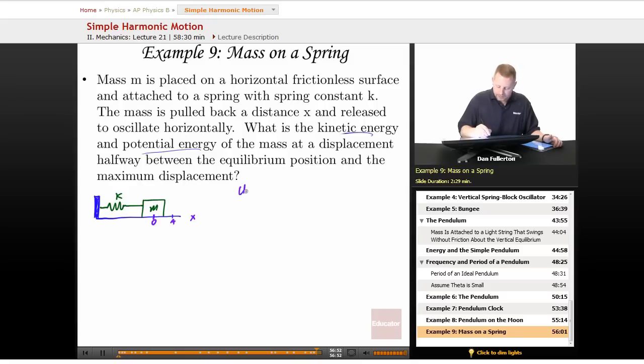And what we know is that the maximum energy is one-half kx squared. So the potential energy due to the spring at A is going to be one-half times k.